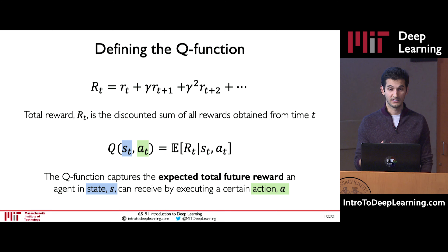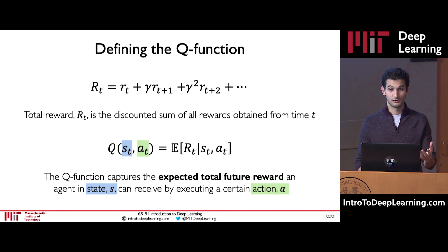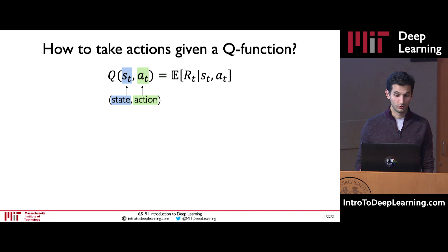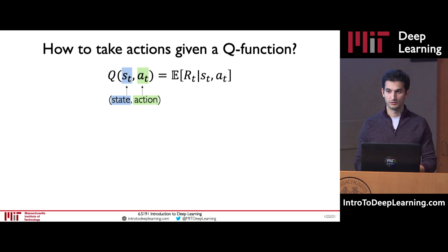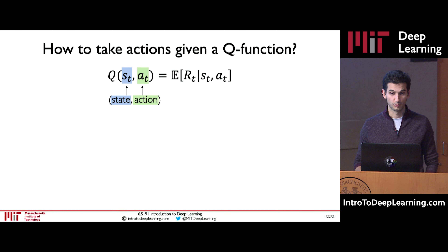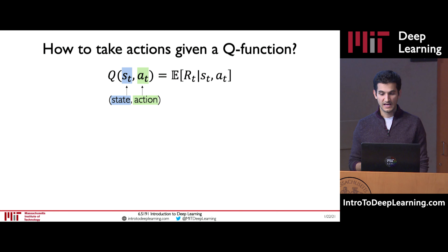If we took a really good action in a state, our Q function should return a very high expected total future reward. If we took a bad action, the Q function should reflect that and return a very poor or penalized future reward. So, let's say I give you this magical Q function — a black box that you can feed the state and action into, and it gives you the expected future return on rewards. How can we, as agents in this environment, choose what action to take if we have access to this Q function?